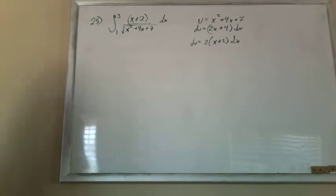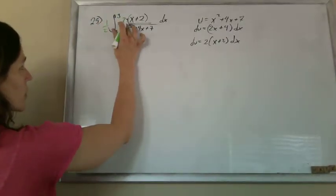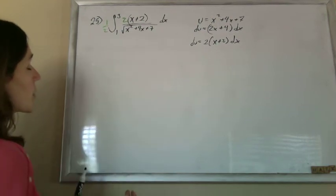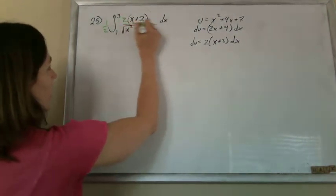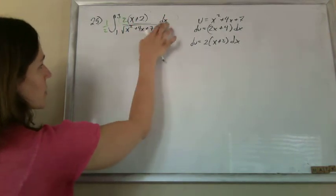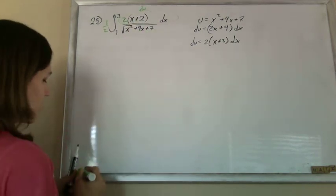Constants do not concern us. I'm going to multiply by a fancy form of 1 by multiplying by 2 and dividing and multiplying by a half at the same time. Didn't change anything. But now I've got 2 times x plus 2 dx on the top, and that whole thing is going to be replaced with a du.